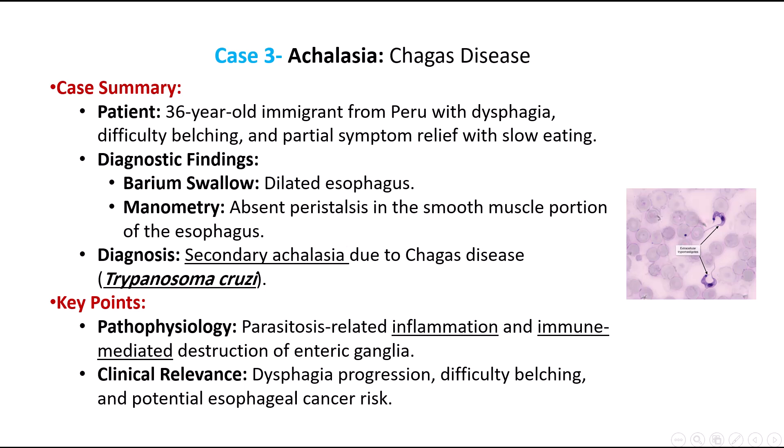Next, consider a 36-year-old immigrant from Peru who presents with difficulty swallowing liquids and belching. His symptoms are somewhat alleviated by eating slowly and extending his neck, with no fever, weight loss, or chest pain. A barium swallow reveals a dilated esophagus, and manometry confirms absent peristalsis in the smooth muscle portion of the esophagus. This patient's symptoms are most likely due to Chagas disease, caused by chronic infection with Trypanosoma cruzi, leading to secondary achalasia, where parasitosis-related inflammation and immune-mediated destruction of the enteric ganglia result in uncoordinated smooth muscle activity and incomplete relaxation of the lower esophageal sphincter.